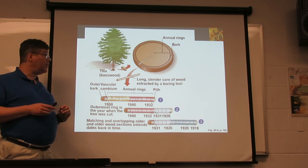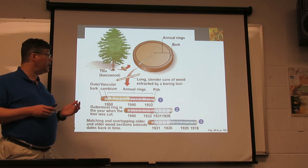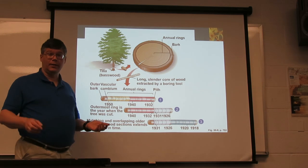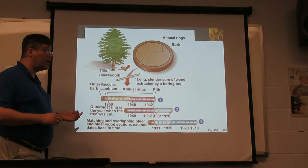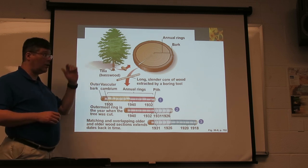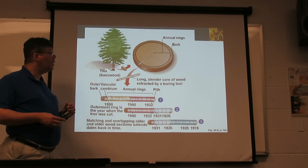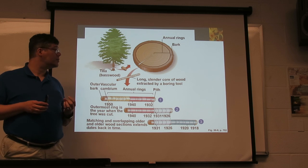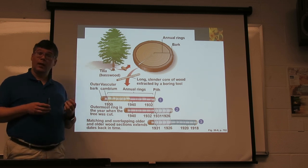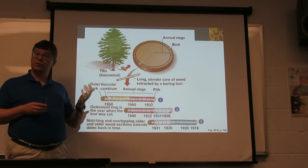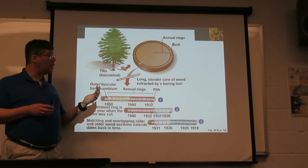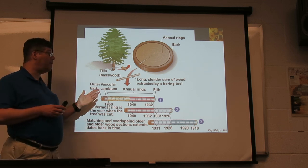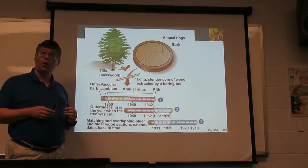By looking at the tree, we get not only how old it is, but something of the history of conditions. Now, if we find a dead log and look at the rings, maybe we'll find things that match. For example, in a live tree we find a set of seven good years followed by seven bad years. Then in this log, we find those same seven good and seven bad years near the outside, not long before that tree died. So we can match them up and put together a longer history of conditions.